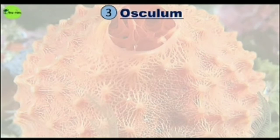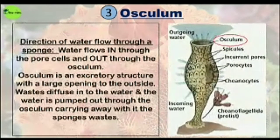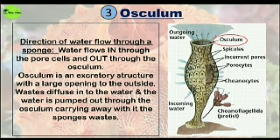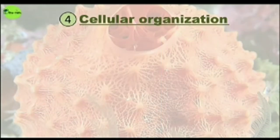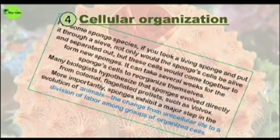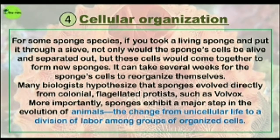The third characteristic feature is the osculum. Water flows in through the pore cells and out through the osculum. The osculum is an excretory structure with a large opening to the outside. Waste products diffuse into the water, and water is pumped out through the osculum, carrying away the sponge's wastes.